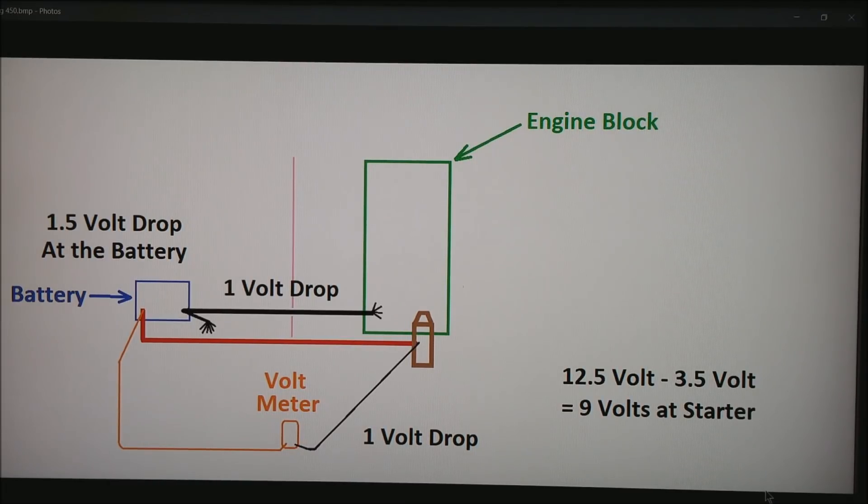So now if you add all these up, 1.5 volts at the battery plus the 1 volt going down the positive and the 1 volt loss in the negative, you'll probably be seeing about 9 volts at the starter even with a healthy battery. This only goes down as the battery wears out or wears down through the day.